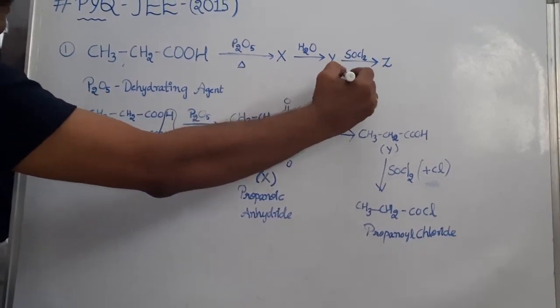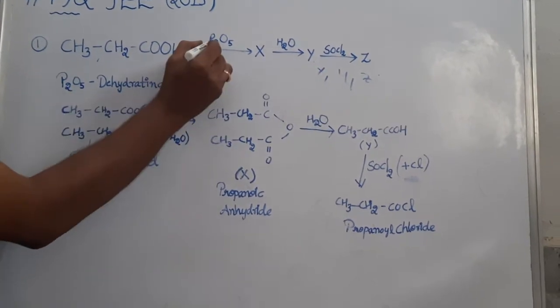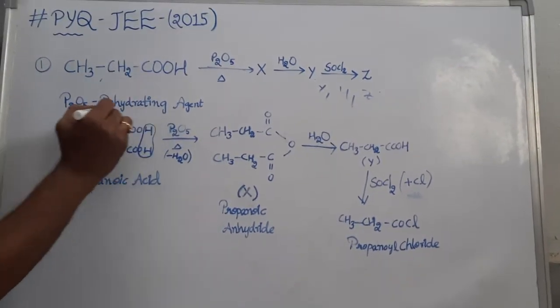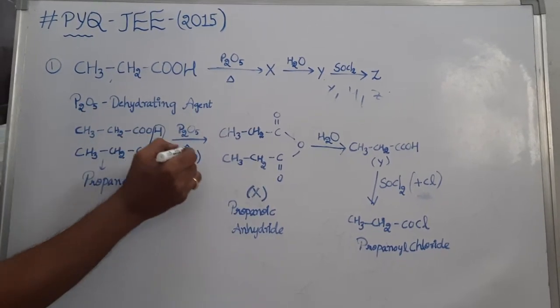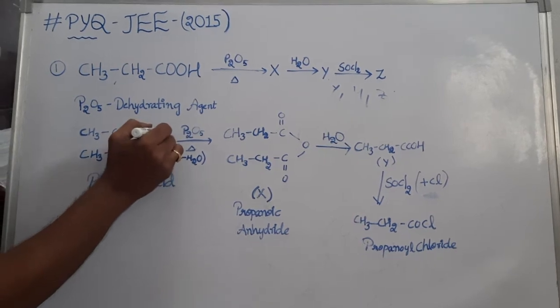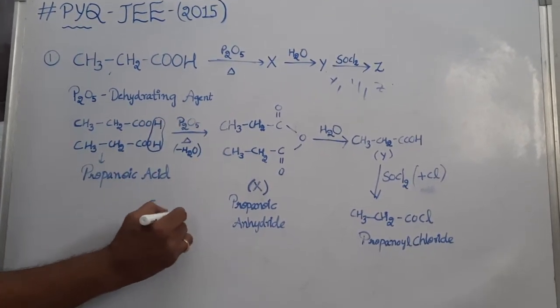We need to identify X, Y, and Z. Here P2O5 is a dehydrating agent which accompanies the removal of water molecule from the compound. Here concentrated H2SO4 also acts as a dehydrating agent.